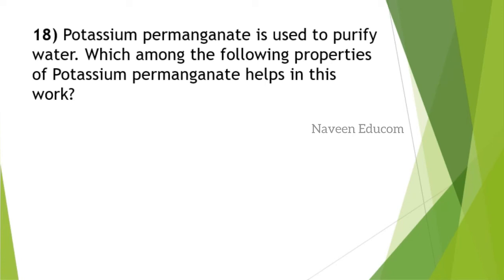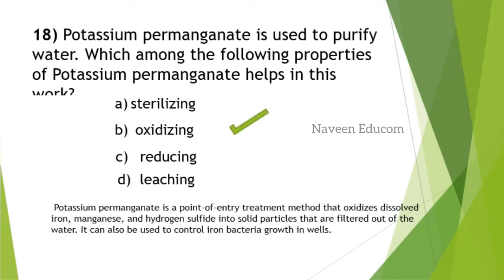Potassium permanganate is used to purify water. Which property of potassium permanganate helps in this work? Options are sterilizing, oxidizing, reducing, leaching. The answer is oxidizing property. Potassium permanganate is a point of entry treatment method that oxidizes dissolved iron, manganese, and hydrogen sulfide into solid particles that are filtered out of the water. It can also be used to control iron bacteria growth in wells.